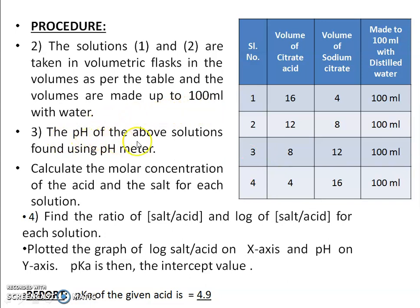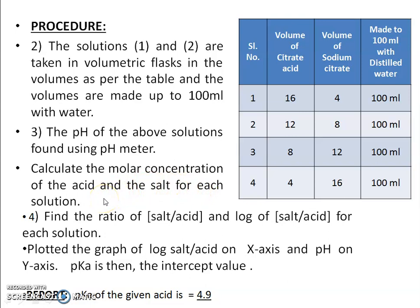The pH of each of the above solutions is measured using a pH meter. Then calculate the molar concentration of the acid and salt for each solution — that is, how much concentration of citric acid is present and how much concentration of sodium citrate is present.